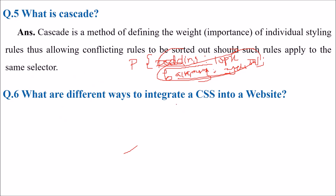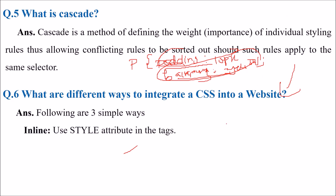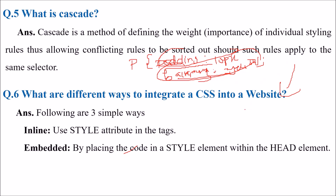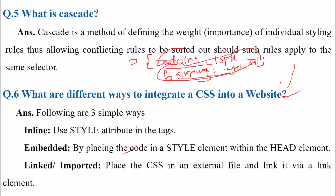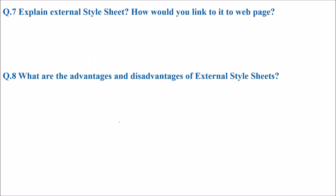What are the different ways to integrate CSS into a website? There are basically three ways: you can use a style attribute directly in the HTML tags, by placing the code in a style element within the head element, or you can have an external file and link it via a link element.